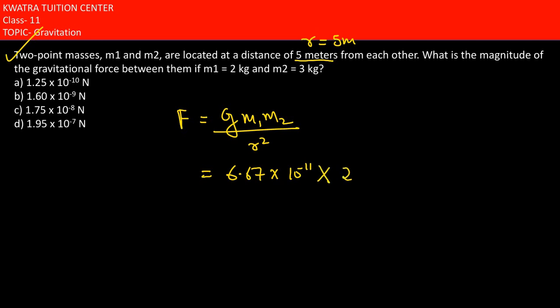And then we have M1 which is 2 kg, M2 which is 3 kg. R squared is there, R value is 5, squared which is 25.